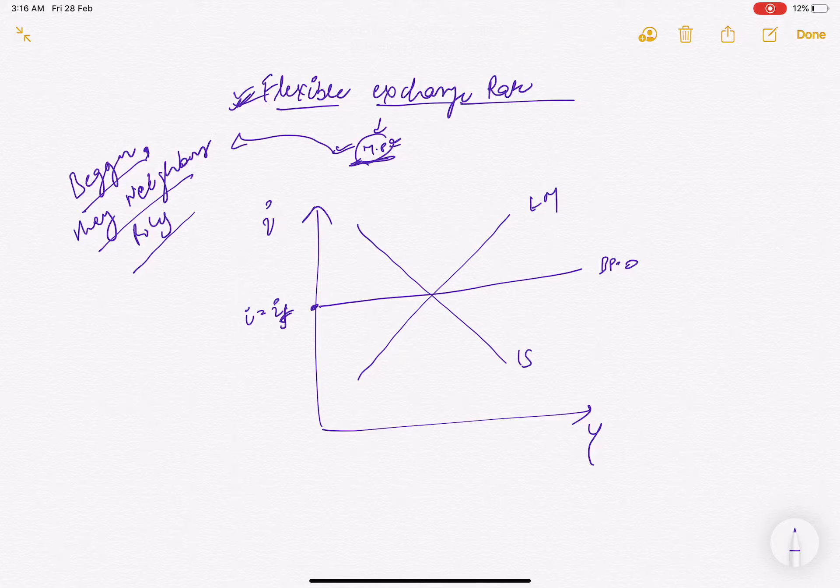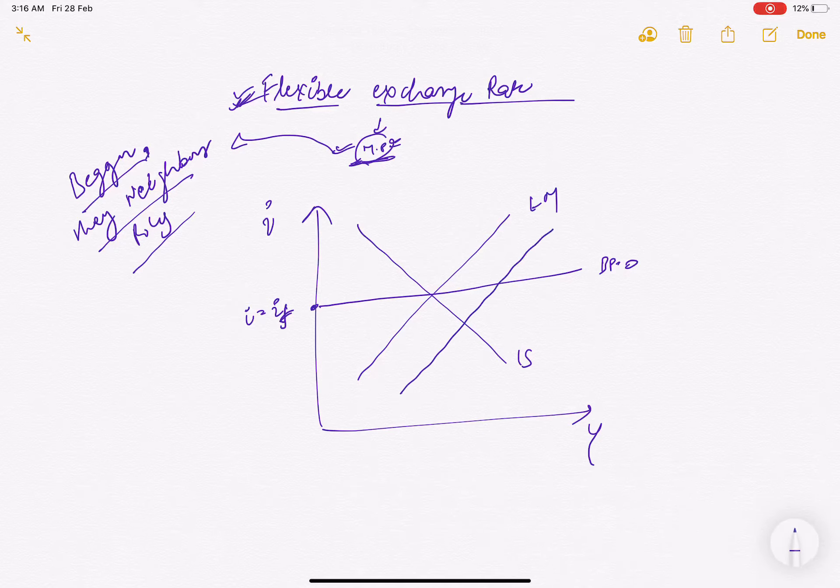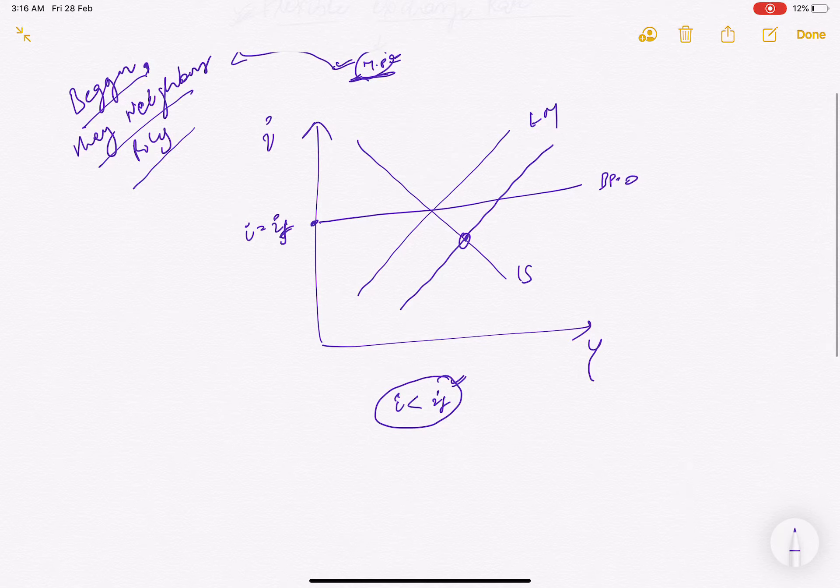If we have monetary policy under flexible exchange rate, the LM curve shifts rightward in parallel. When it shifts rightward, our country's interest rate falls below the world interest rate. When the interest rate falls, capital will flow out of our country.